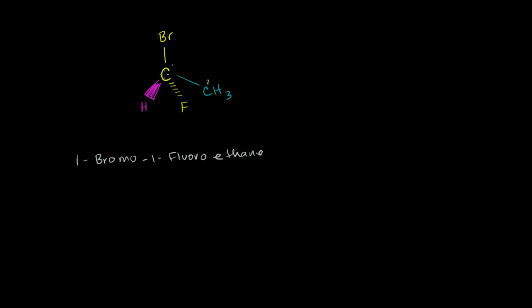We know immediately, based on the last few videos, that this is also a chiral carbon. And if we were to take its mirror image, we would get another enantiomer of this same molecule, or that they are enantiomers of each other. So what does the mirror image of this 1-bromo-1-fluoroethane look like?